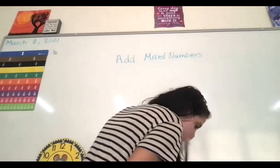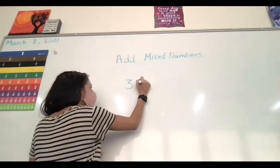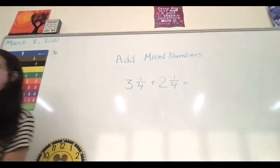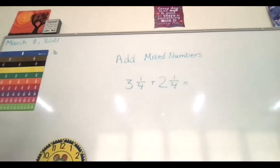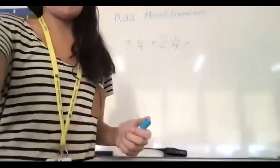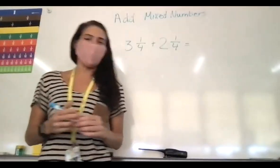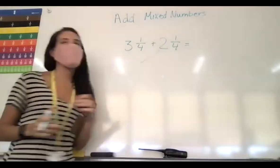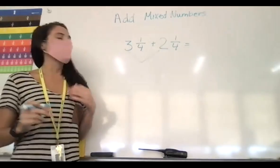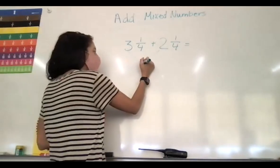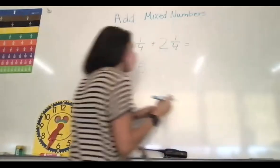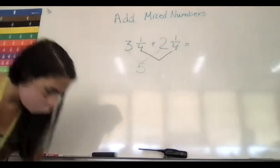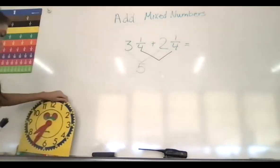So if we have a problem that looks like this: we have 3 and 1 fourth plus 2 and 1 fourth. What we do is we first add our whole numbers. So, 3 plus 2 is 5. Then we add our fractions, and we add our fractions like we did last week.